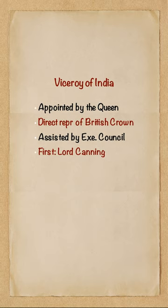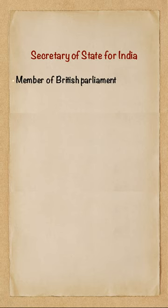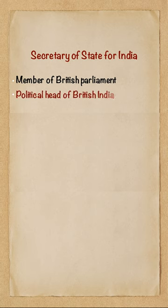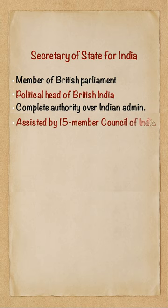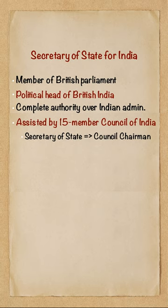Now let's check more details about the post of Secretary of State for India. He was to be a member of the British Parliament and responsible to the Parliament. This post was the political head of British India, vested with complete authority and control over Indian administration. To assist the Secretary of State for India, the act established a 15-member Council of India, an advisory body. The Secretary of State for India was the chairman of the council.